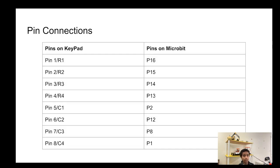For our program, the pin connections are: row number 1 maps to pin 16, row number 2 to pin 15, row number 3 to pin 14, and row 4 to pin 13. For the columns: column 1 is pin 2, column 2 is pin 12, column 3 is pin 8, and column 4 is pin 1.